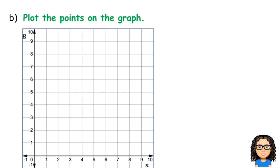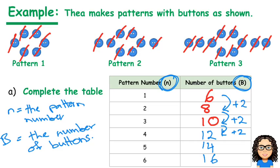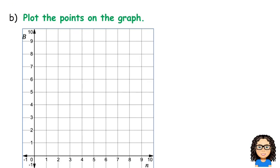So, plot the points on our graph. We've got our points here, so the first coordinate point, now look at that first one, is pattern number 1, and number of buttons is 6. So I need to plot that point 1, 6. So I'm going to go across to pattern number 1, notice that we've got an n on this axis here. So pattern number 1 is there, and there were 6 buttons. So that's going to give me this coordinate point there.